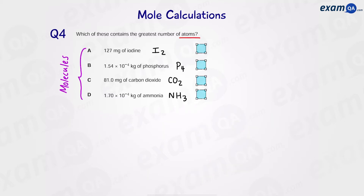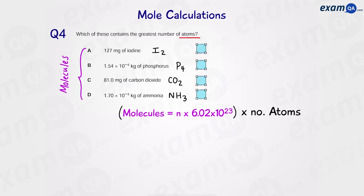To tackle this question, we first work out the number of molecules in each scenario by doing moles times Avogadro's constant. Once we have the number of molecules, we then times it by how many atoms are in each molecule. For iodine, times by 2; for phosphorus, times by 4. For carbon dioxide and ammonia, times by 3 and 4 respectively — CO2 has 3 atoms (1 carbon, 2 oxygens) and ammonia has 4 atoms (1 nitrogen, 3 hydrogens).